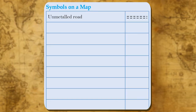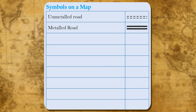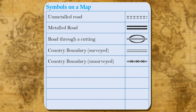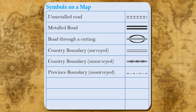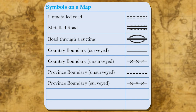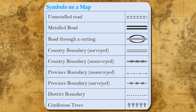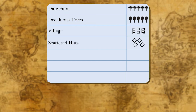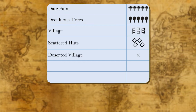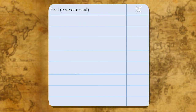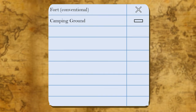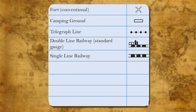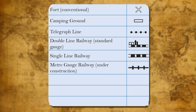Symbols on a map include: unmetalled road, metalled road, road through a cutting, country boundary surveyed, country boundary unsurveyed, provincial boundary unsurveyed, province boundary surveyed, district boundary, coniferous trees, date palm, deciduous trees, village, scattered huts, deserted village, church, fort surveyed, ford, conventional, camping ground, telegraph line, double line railway, standard gorge.